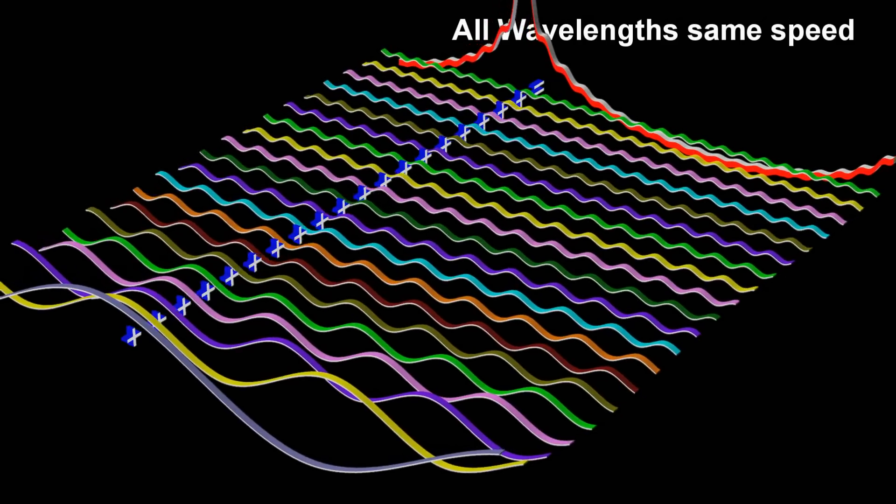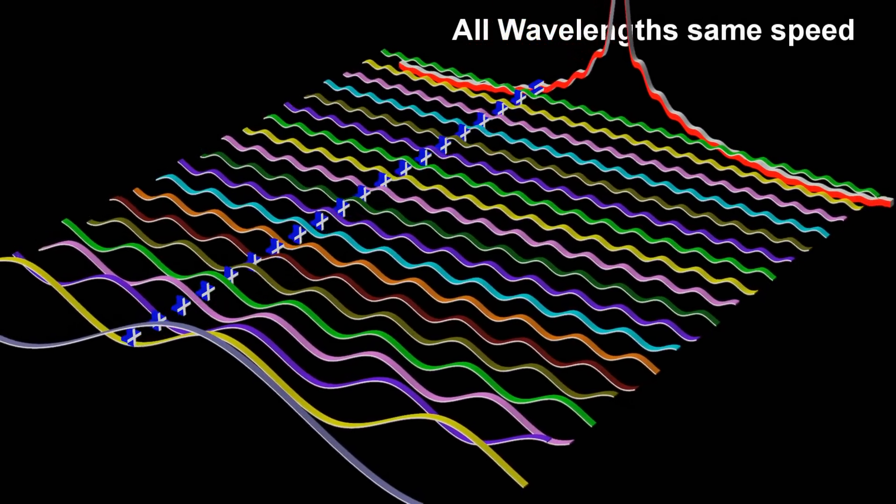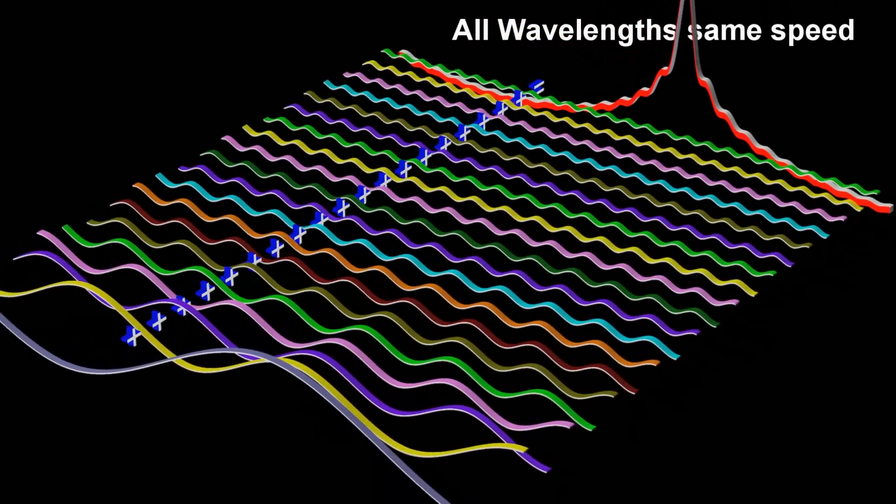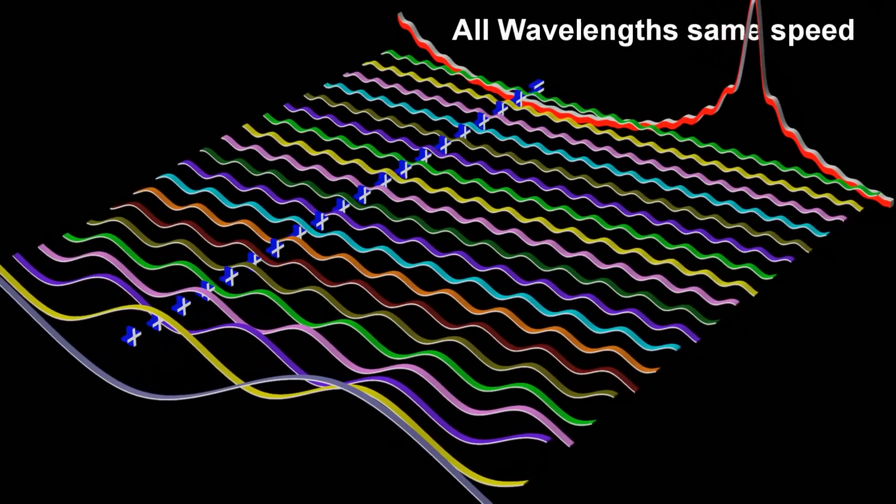On the other hand, if all the different wavelengths have the exact same phase velocity, then the pattern can stay constant, and the group velocity will be equal to the phase velocity.